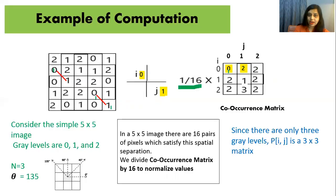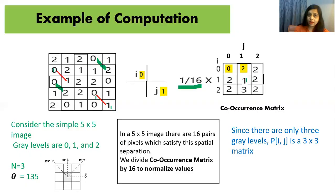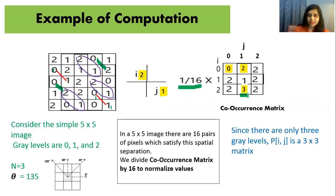Next, check for i equals one and j equals zero: find one-and-zero pairs and note them. Then i equals one and j equals one, and so on. For i equals two and j equals one, there are three such pairs, so we write three.